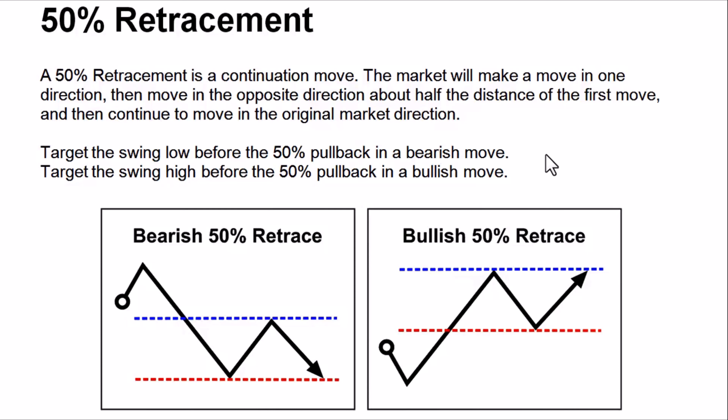The market will move in one direction, then move in the opposite direction about half the distance of the first move. When the market is going downward or upward in a sharp or drastic move, it tends to pull back or retrace at least 50% of that move before it continues towards the same direction — either bullish or bearish.